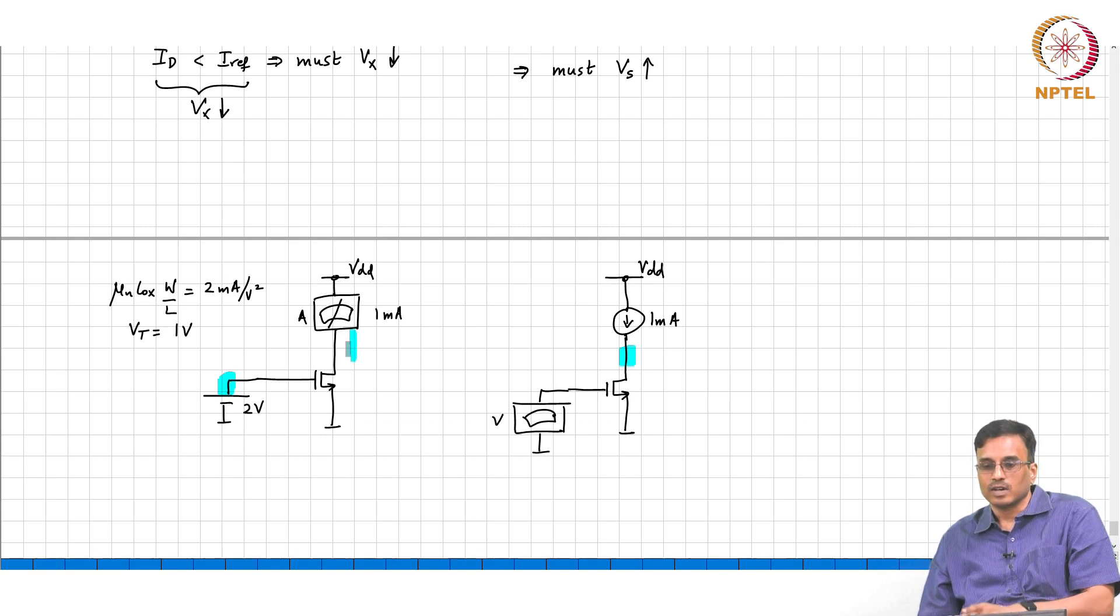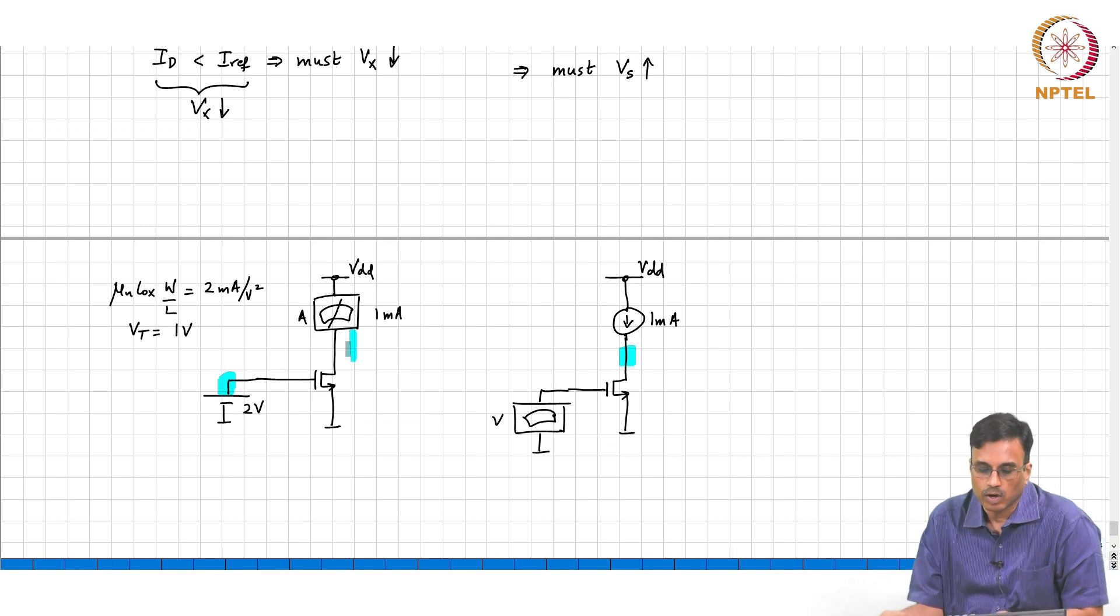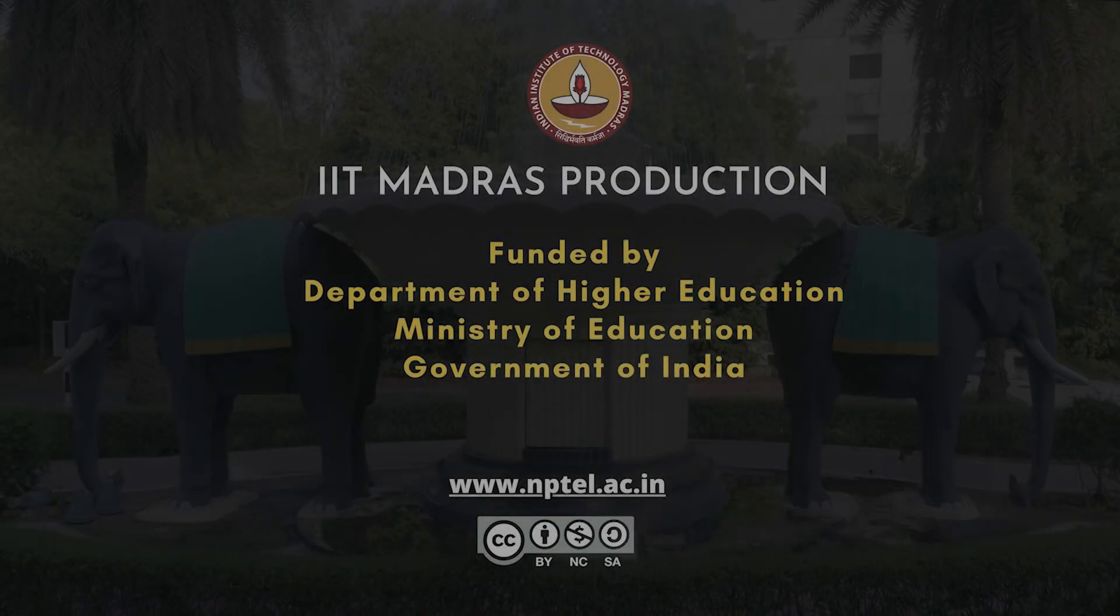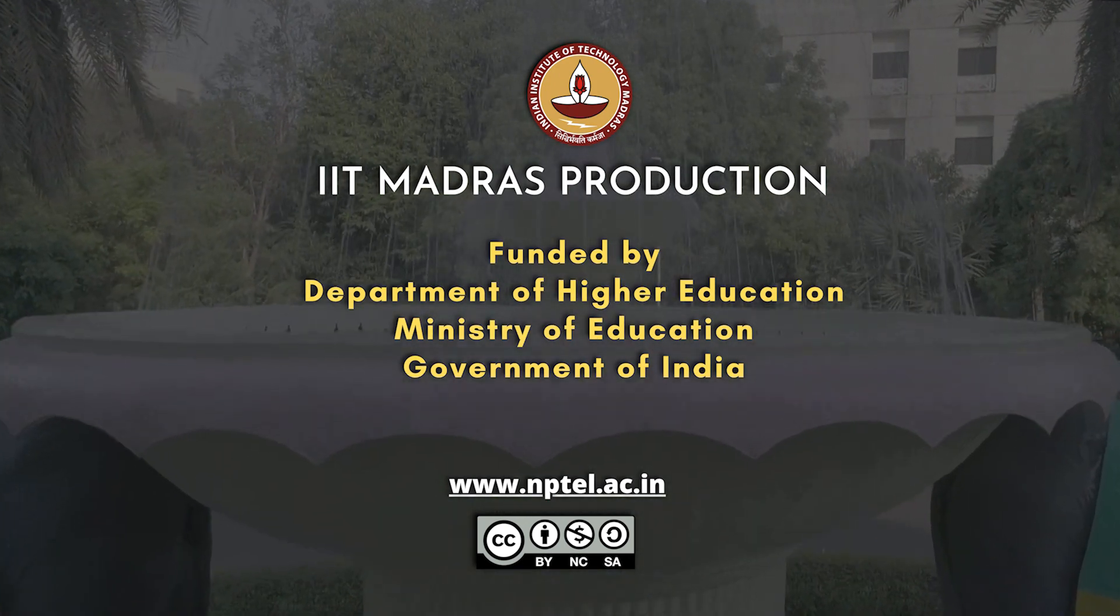So this is the, I mean, though you would be tempted to use Kirchhoff's law at the drain and say, well, and put the equation and put the stuff in and then conclude that VGS is 2 volts, that is certainly not 2. So I will stop here.